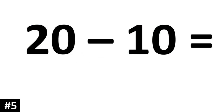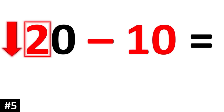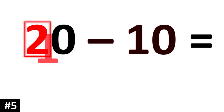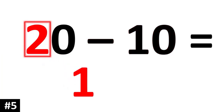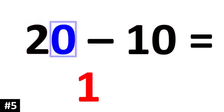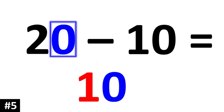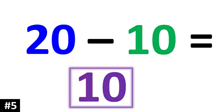How about 20 minus 10? Subtracting by 10 means the tens digit of 2 is going to go down to 1. And the other number stays the same, so we bring down the 0, and 20 minus 10 is 10.